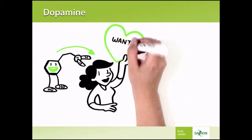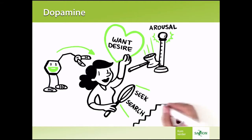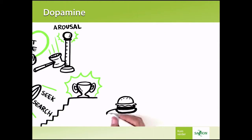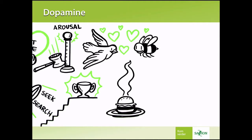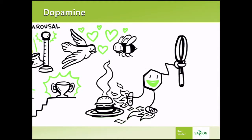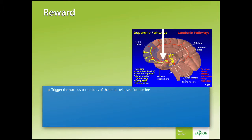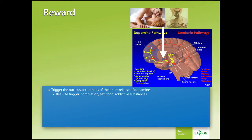Dopamine causes us to want, desire, seek out, and search. It increases our general level of arousal and our goal-directed behavior. It's not just about physical needs such as food or sex, but also about abstract concepts. Dopamine ignites curiosity and fuels our searching for information. The reward triggers the nucleus accumbens and releases dopamine. In real life we have different triggers: completing a list, having sex, eating food, or using addictive substances like caffeine, nicotine, sugar, salt, or fat.